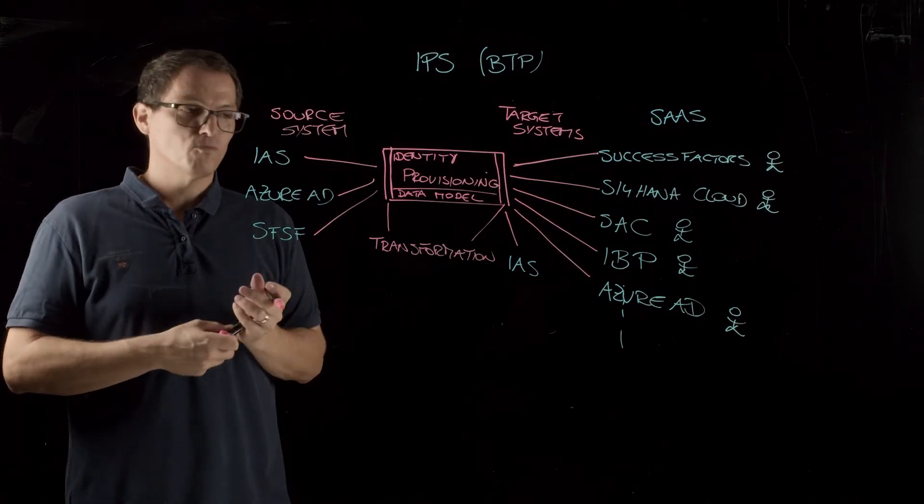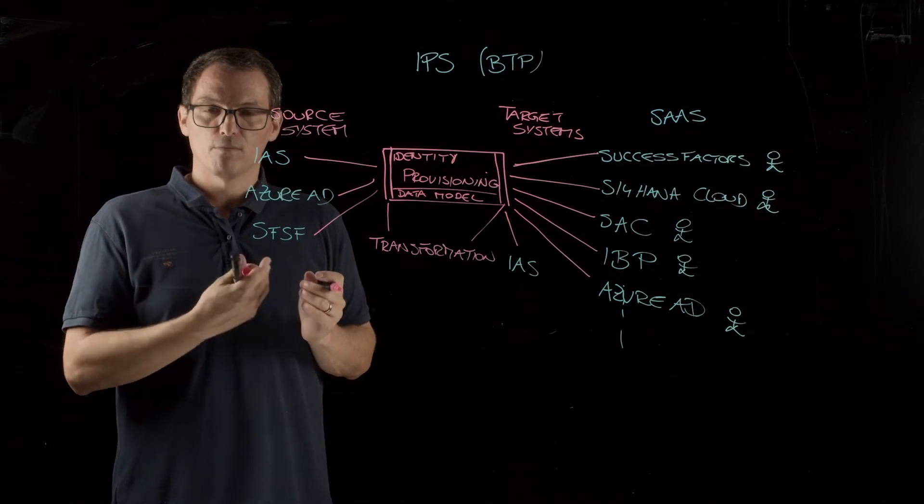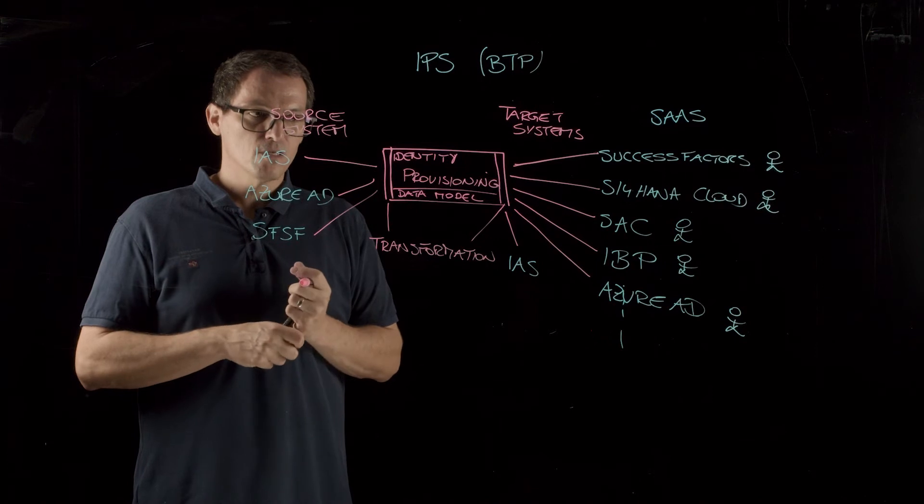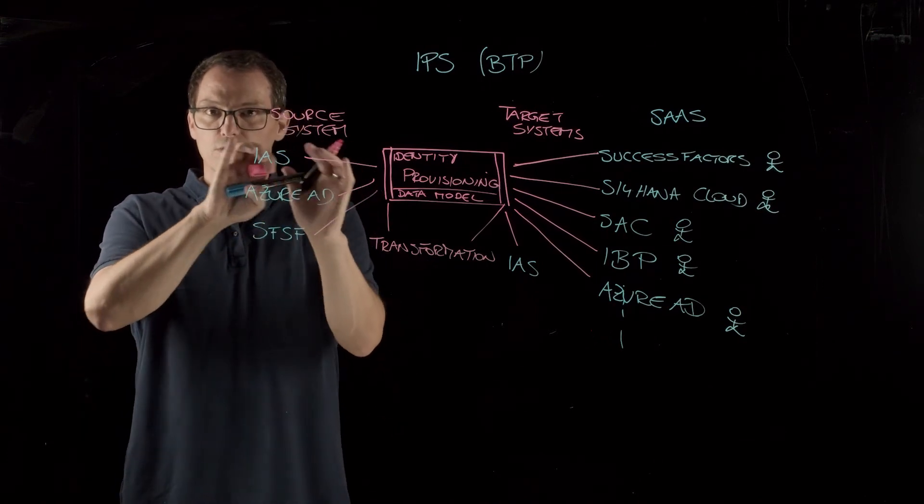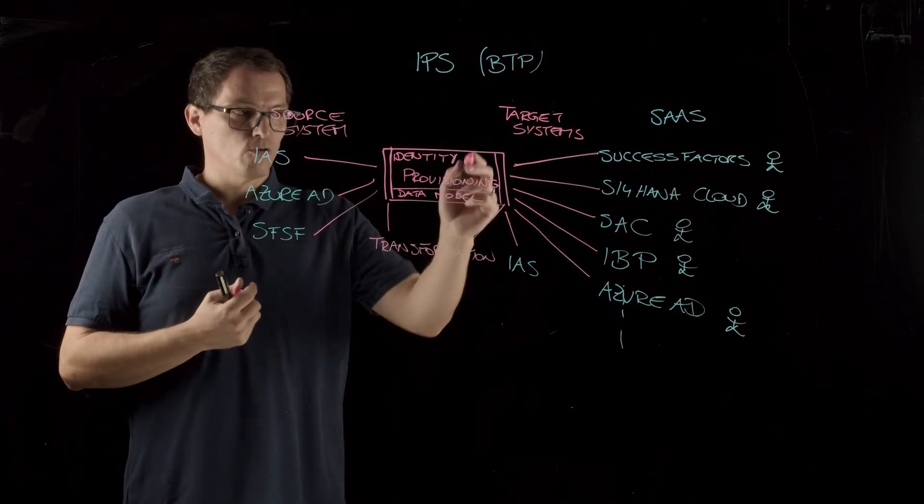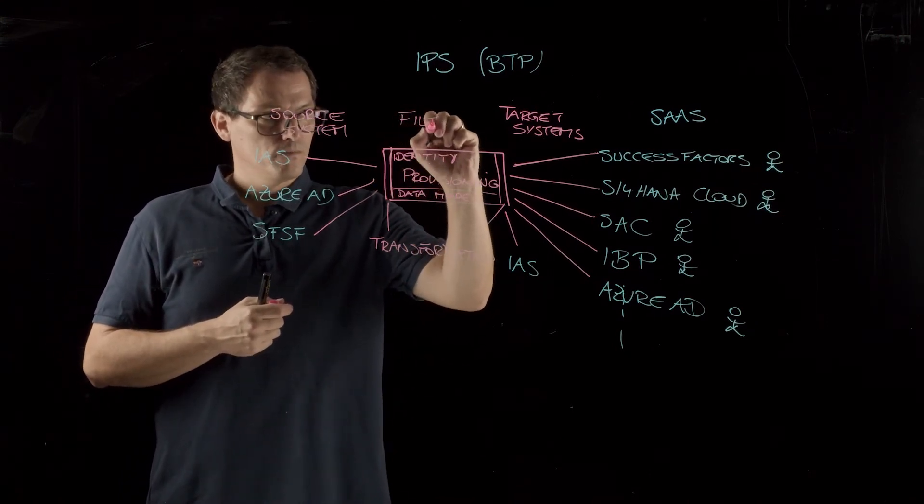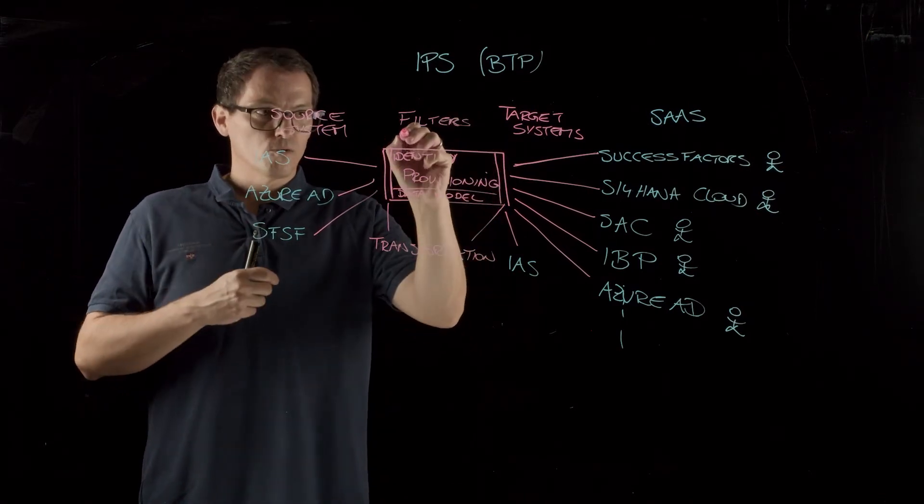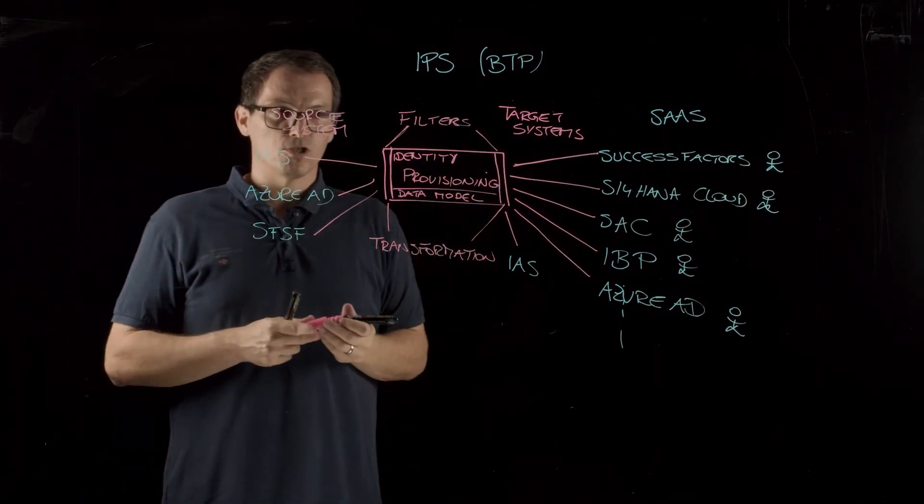And also here on the source and on the target system side. So we have the possibility to make some transformations. This can be either simple field mapping, it can be something more complex like a data transformation. So there you have different options for these transformations. And we also need filters because maybe you don't want to read all the users from the source system. Maybe it should be based on the group assignments in the source system and also for the target system provisioning. So we also have filters here that you can use to reduce the number of entries that are being processed in the identity provisioning service.